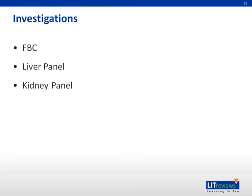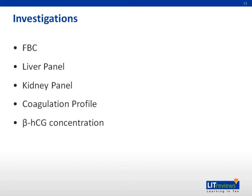Coagulation profile: OHSS is a hypercoagulable state, likely due to hemoconcentration and hypovolemia, so PT, APTT, and INR will be checked. Beta-HCG concentration: a beta-HCG measurement is useful at more than 12 days after an injection of HCG; a positive result at this stage indicates pregnancy, and such an endogenous source of beta-HCG may lead to deterioration of OHSS. Estradiol levels are increased. Ultrasound may be needed to measure the size of the ovaries, to assess the follicles, and to evaluate ascites.